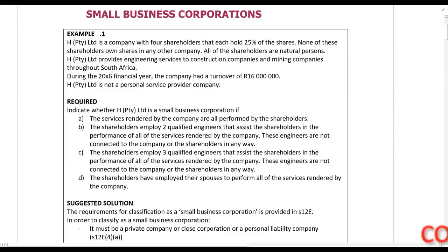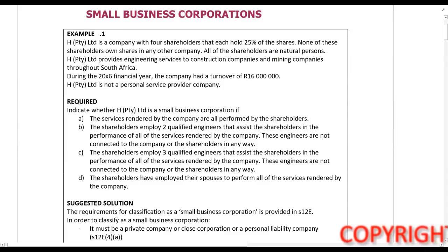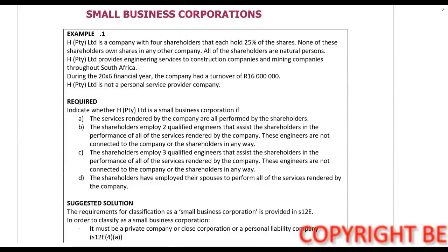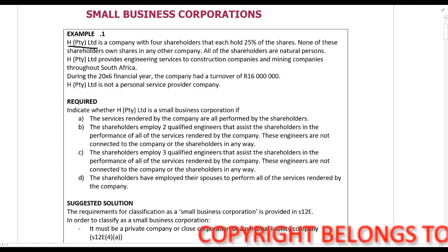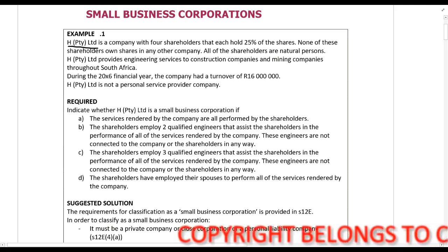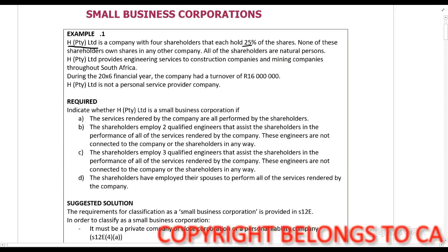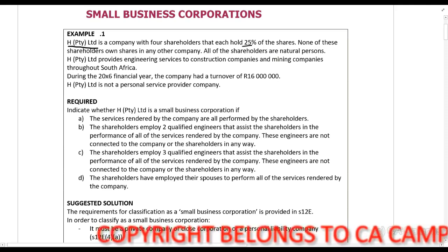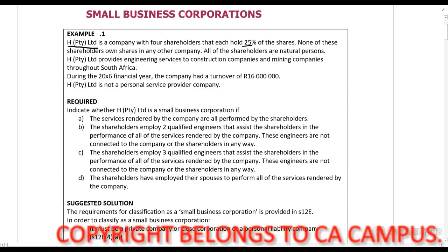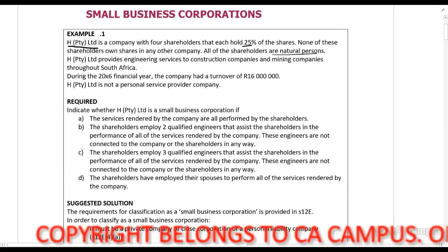In this lecture example, we look at small business corporations. Example 1: HP2I Limited is a company with 4 shareholders that each holds 25% of the shares. Importantly, it's a private company. None of these shareholders own shares in any other company, and all of the shareholders are natural persons.